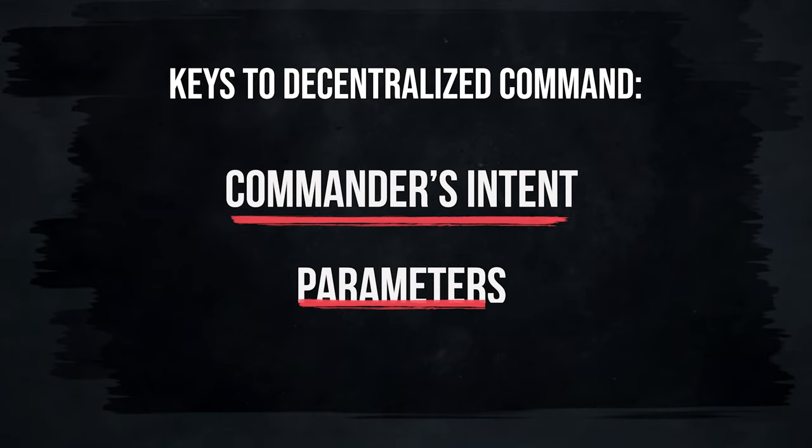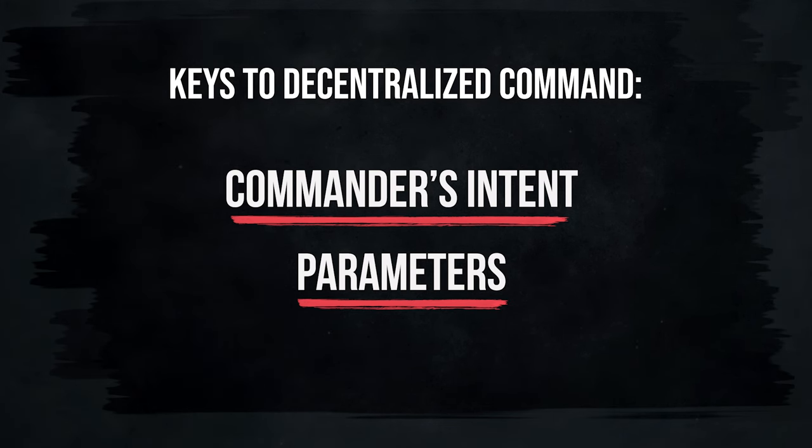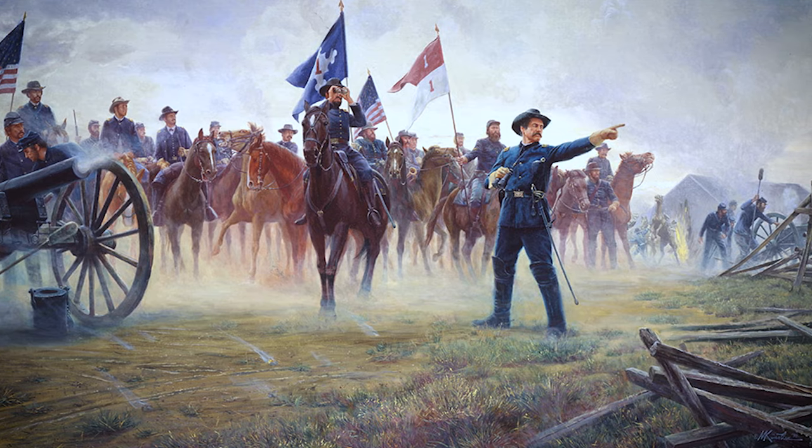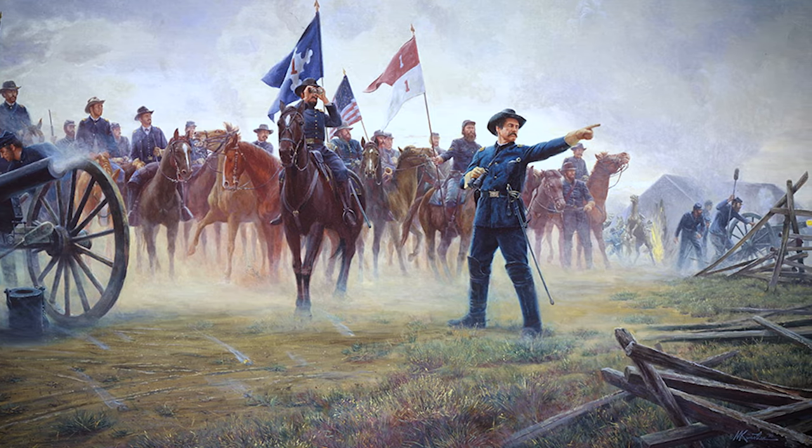The other thing you have to understand is parameters — where you can make decisions and where you can't. What Buford did was not only dismount his team and fight, but he also sent a message back to his commanders to inform them of the situation, explain what he was doing and why, and tell them to push troops forward as fast as possible to seize the high ground at Gettysburg. Build a team of leaders like Buford by explaining the why, the purpose, the goal, the end state, and the parameters for decision-making.